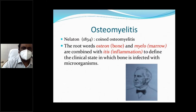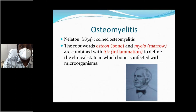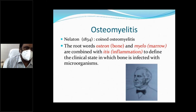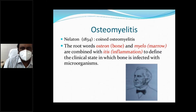What is osteomyelitis? The term osteomyelitis was first defined by Nelaton in 1834, before antibiotics were invented. The root word 'osteo' means bone and 'myelo' means marrow. When both the bone and marrow are infected or inflamed, it is called osteomyelitis — 'itis' indicating inflammation. It is the inflammation of both the bone and the marrow together.